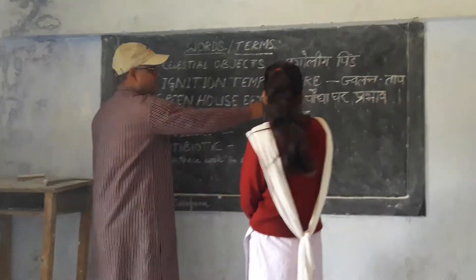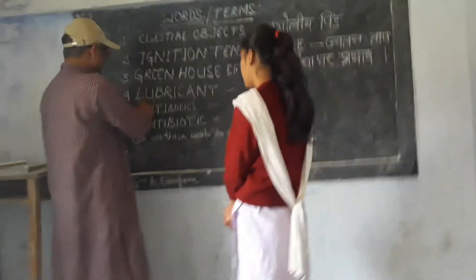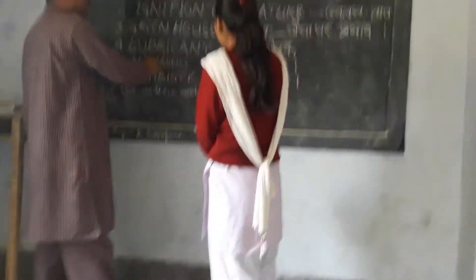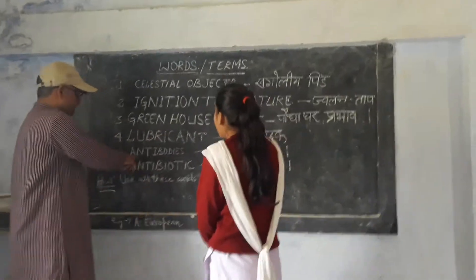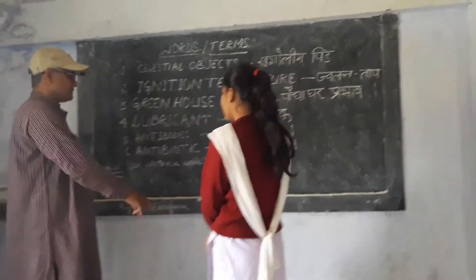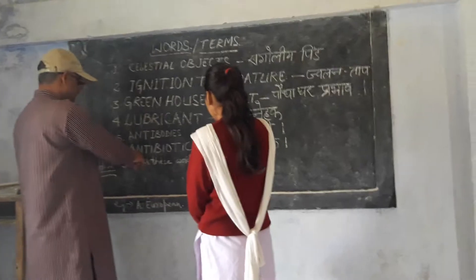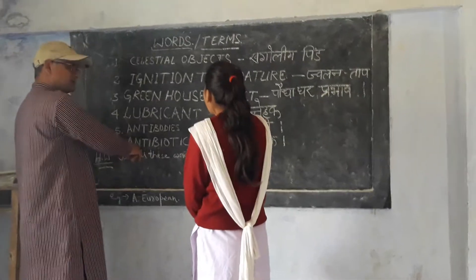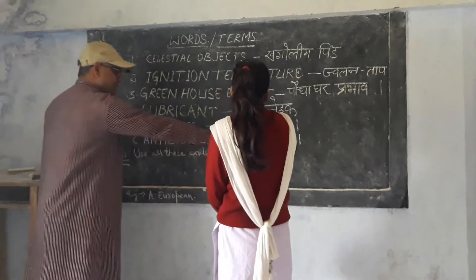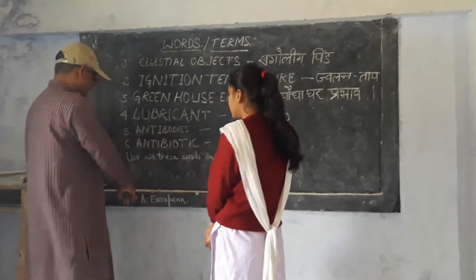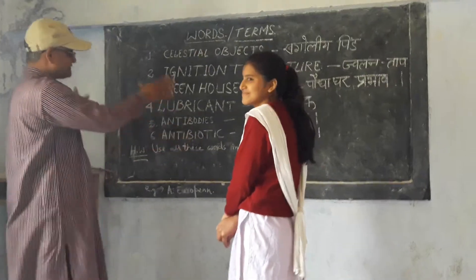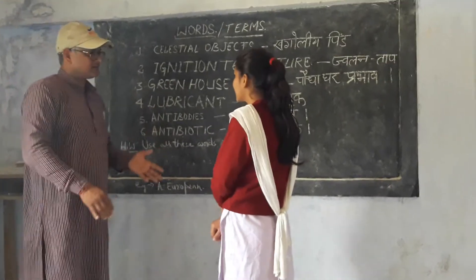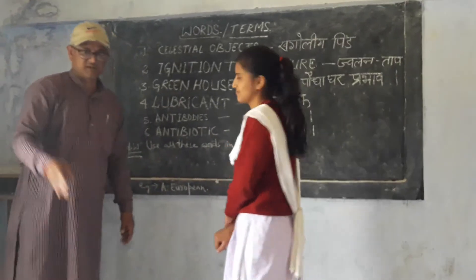Partha Dhar Praha. Third one is Lubricant. Antibodies, Rati Rashi. Antibiotics. You have to use all these given words. Ok? Thank you.